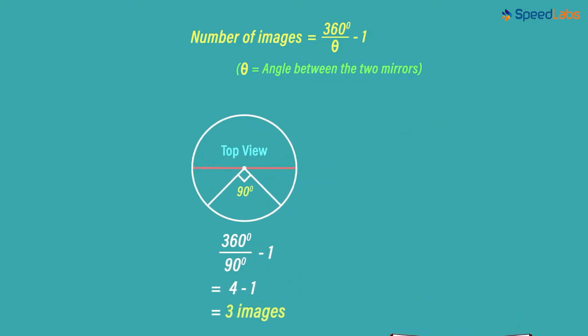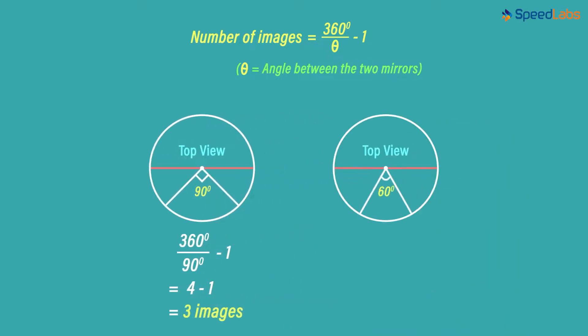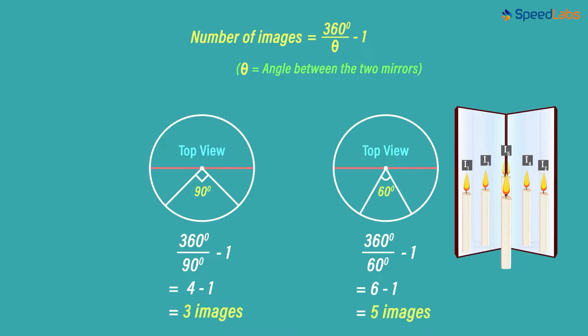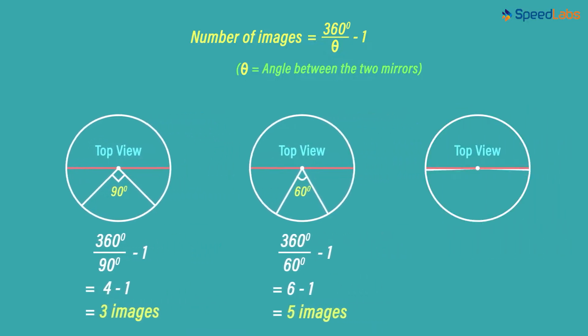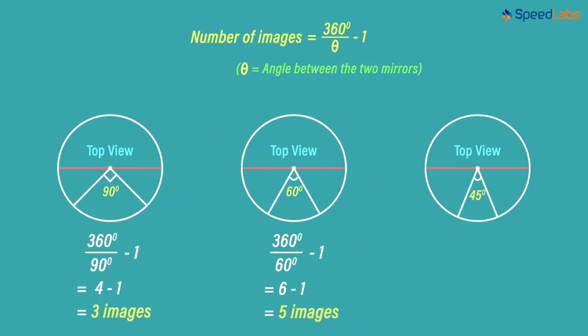When the mirrors are kept at an angle of 60 degrees to each other, we put theta as 60 degrees and the number of images that we get as 5. Similarly, you can calculate it for theta equal to 45 degrees, that is when the mirrors are kept at an angle of 45 degrees. Yes, we get the answer as 7.